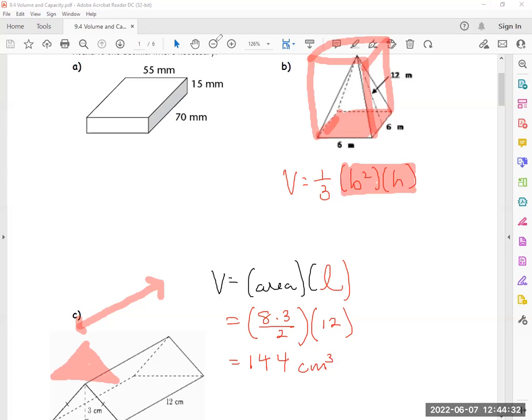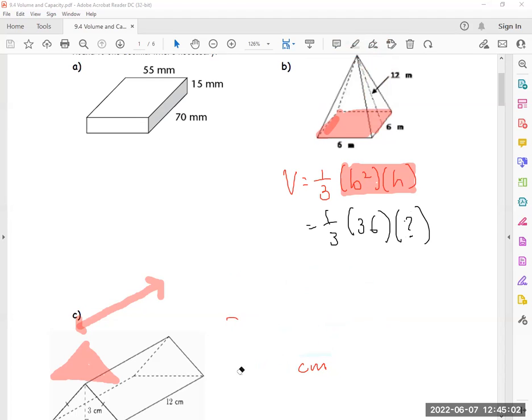We find the area of the base. So the answer would be one-third times the area of the base, which is 6 times 6, times the height, which is... what? I got you. Who wrote 12? I did not rickroll you. Who wrote 12? What is the height? They give you the slant: 12. No, no, no, because it's the slant. What is it?